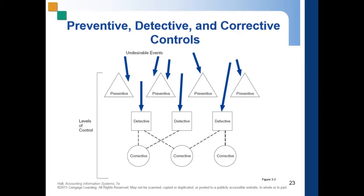There is an important distinction between detective control and corrective control. Detective control identifies anomalies and draws attention to them, while corrective control actually fixes the problem. For any detected error, there may be more than one feasible corrective action, but the course of action may not always be of use. The company must evaluate what measures or controls to apply based on the detected results.